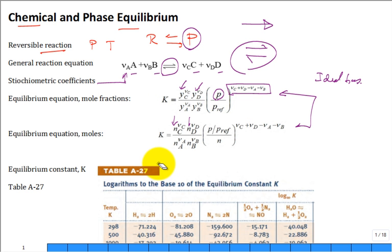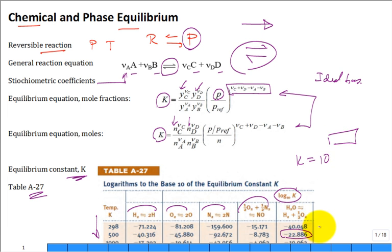And then how does temperature affect it? Well, this K, this equilibrium constant, is a function of temperature. And we find that equilibrium constant in our table A27 in our textbook as a function of temperature for different reactions, which are basically dissociation reactions. Those are reversible reactions. Notice that these numbers in here, to get the K, you need to take 10 to the power of that number. So for example, this would be 10 to the minus 22.886. Very, very small number.